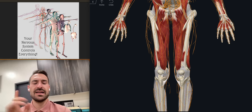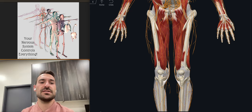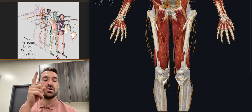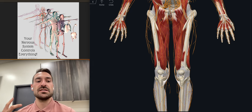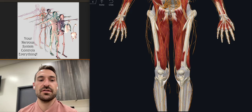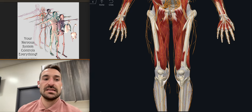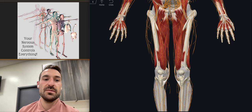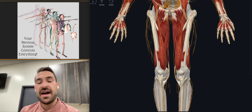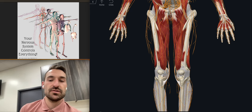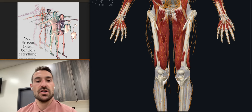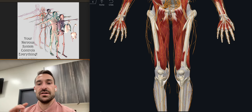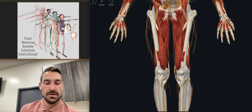I thought it was very fitting — the picture in this top corner shows how your nervous system controls everything, whether that has impact on the arterial system, the lymphatic system, the structural system, the lungs, the heart — like everything. It has a factor in how everything functions.